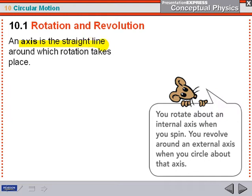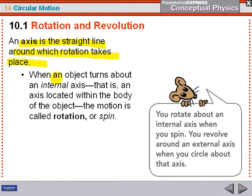An axis is the straight line around which rotation takes place, such as the axle of a car. When an object turns around an internal axis—that is, an axis located within the body of the object—the motion is called rotation or spin.